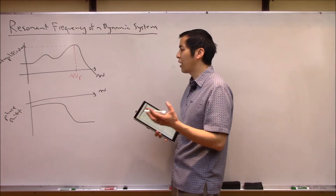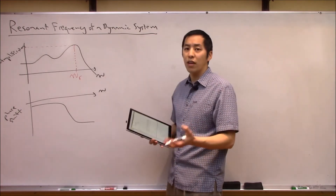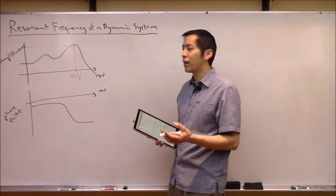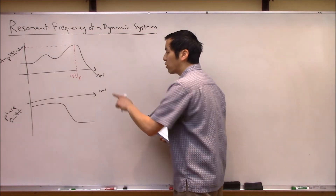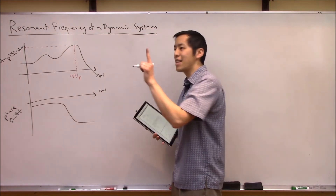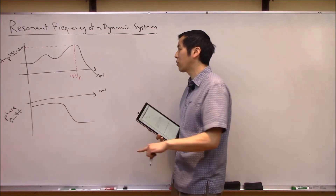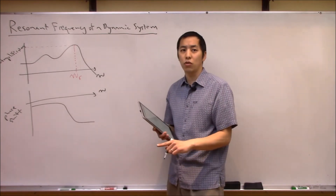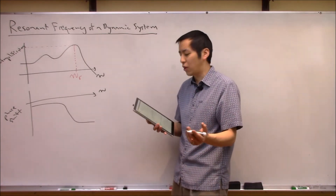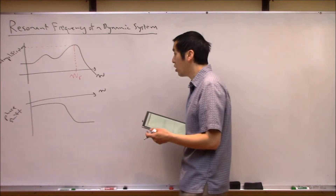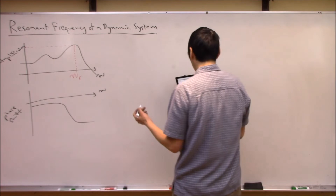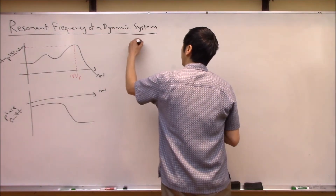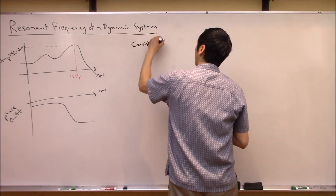To sort that out, let's take a look at a standard second-order system written down mathematically, and we'll show that the natural frequency is not the same thing as the resonance frequency, and it's not the same thing as the damped natural frequency.